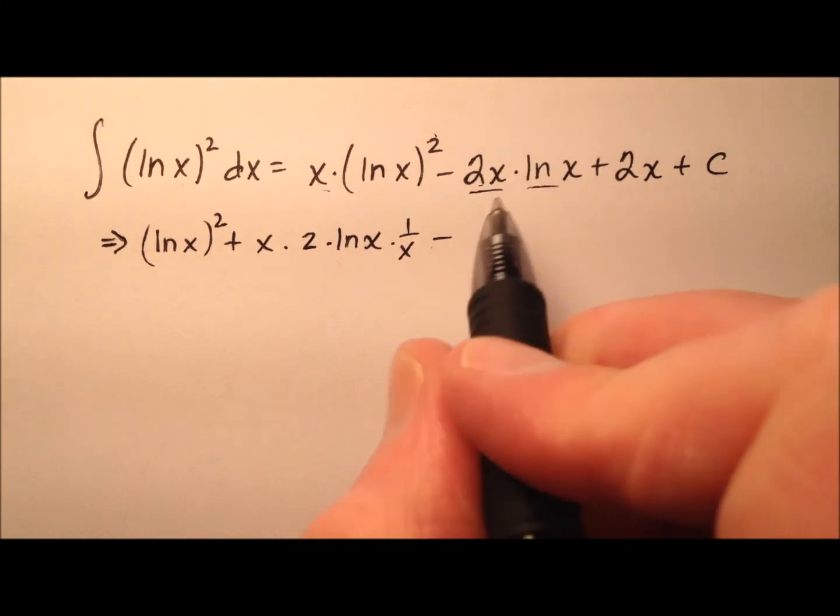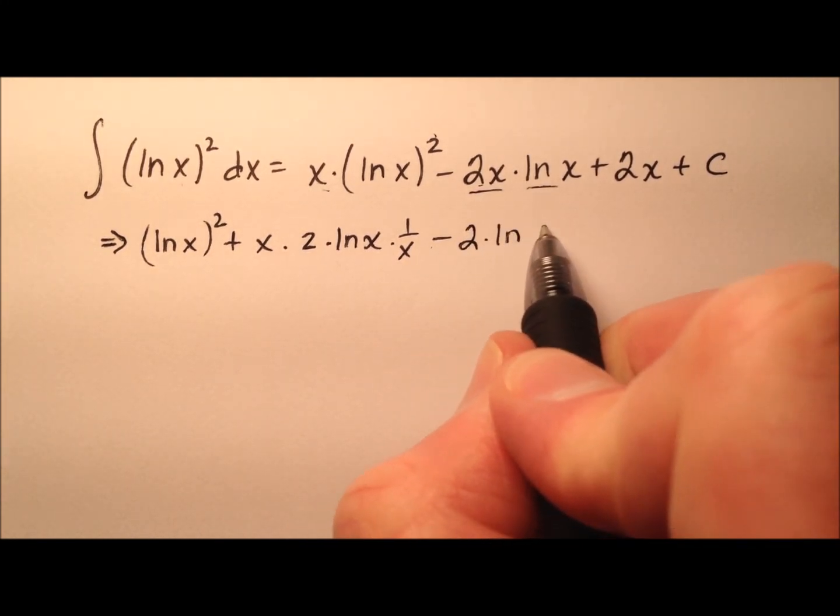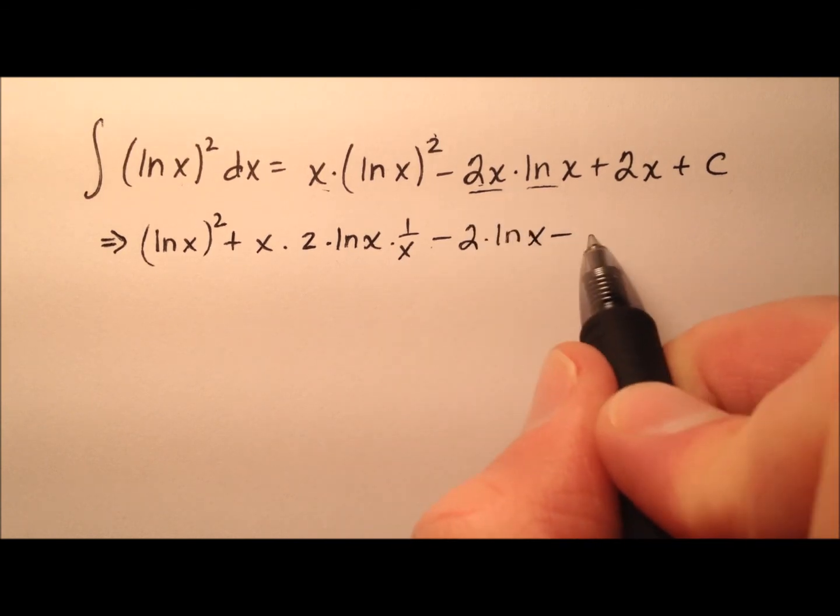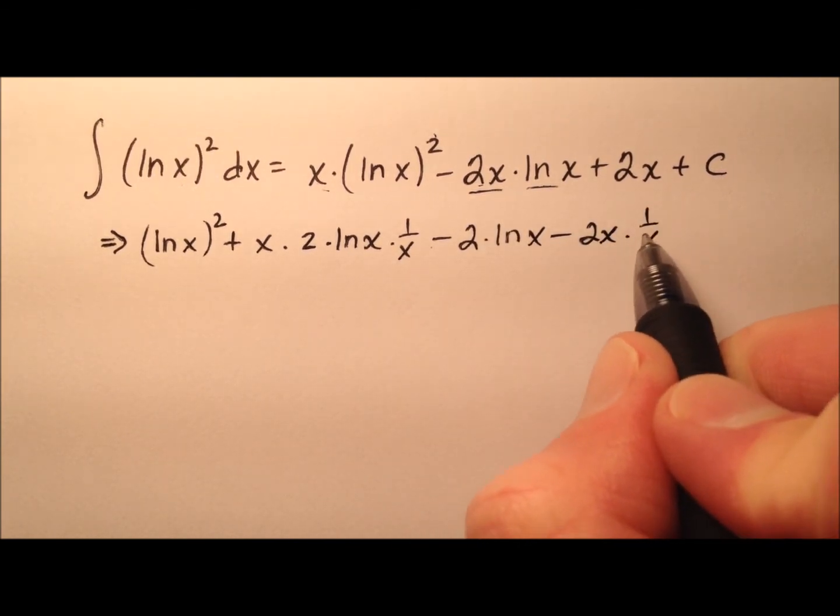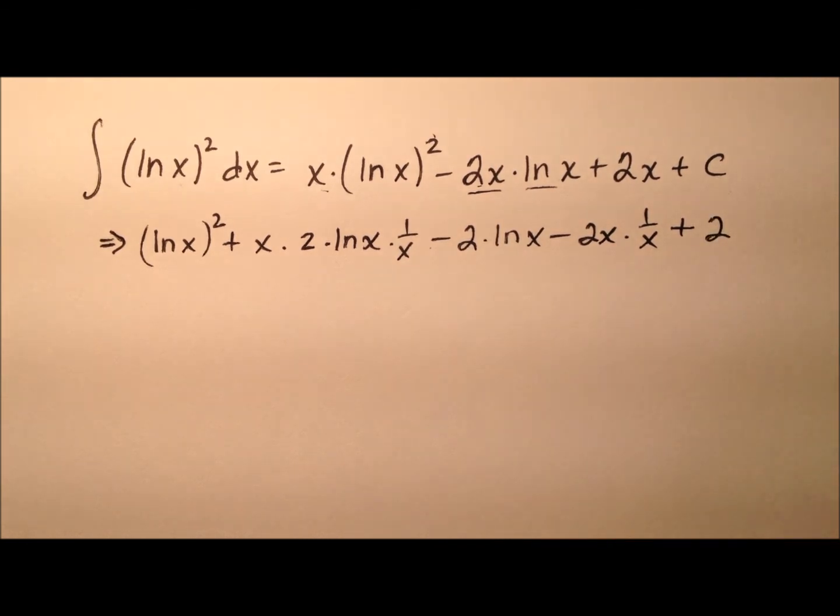and then we have product rule here again. So the derivative of the first, and then minus 2x times 1 over x, and then plus 2.